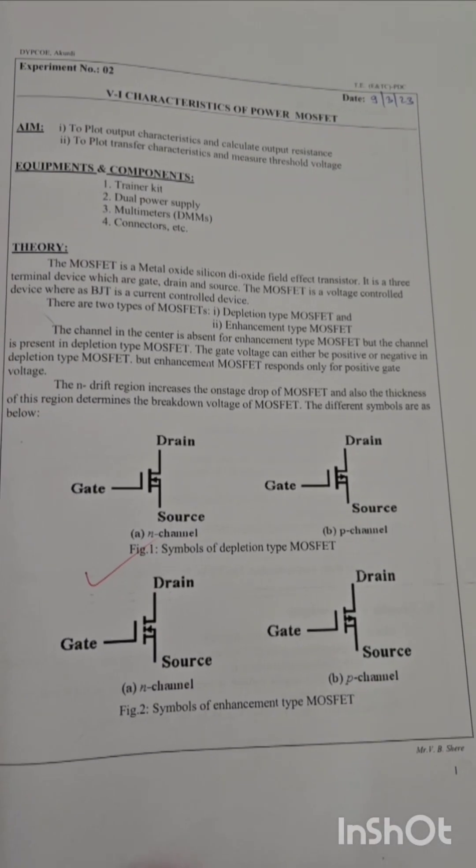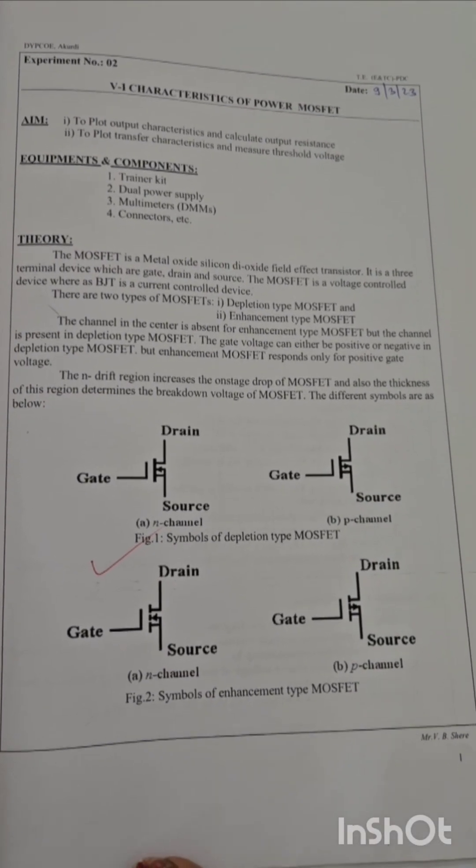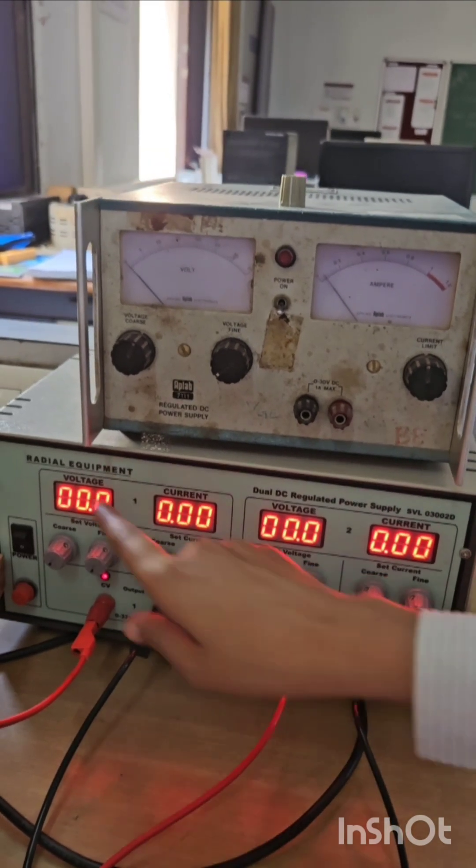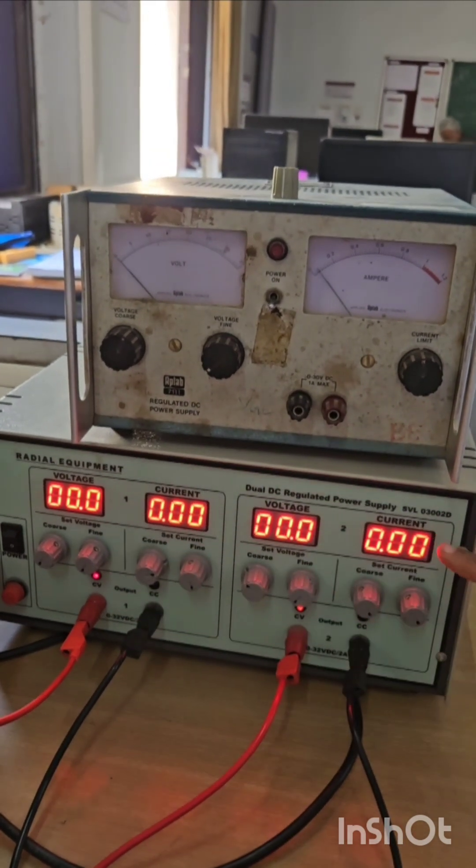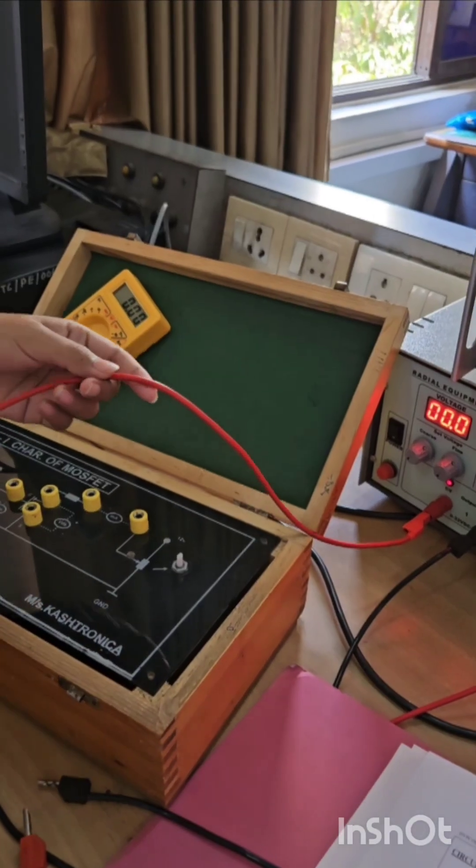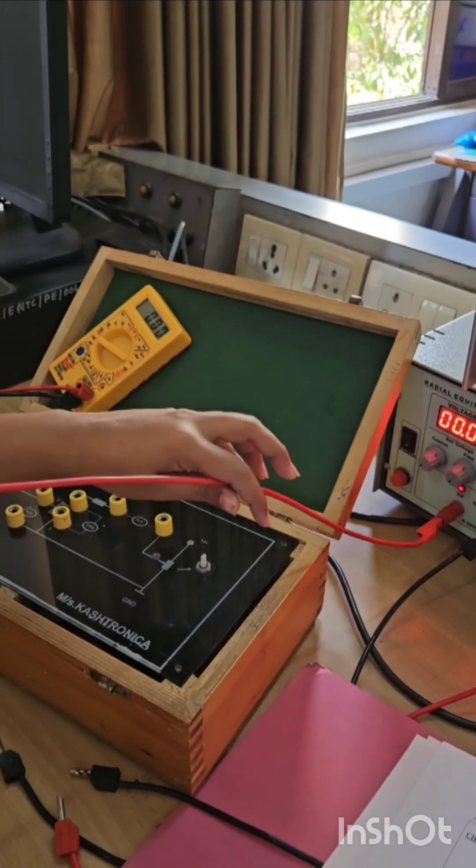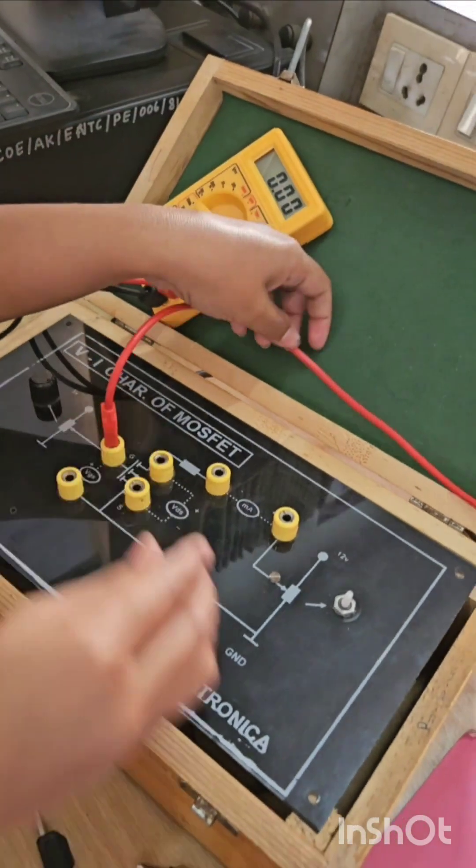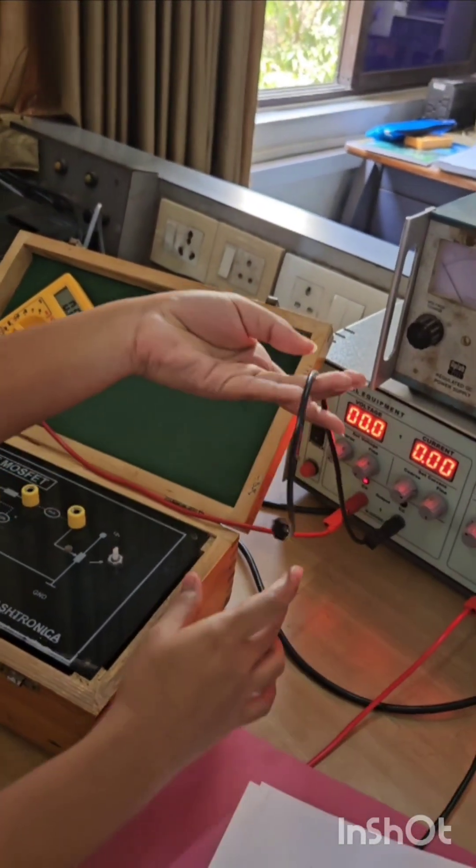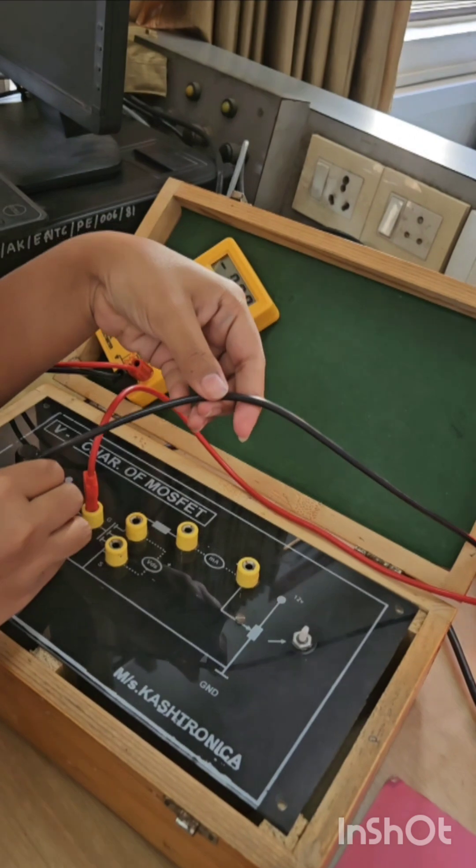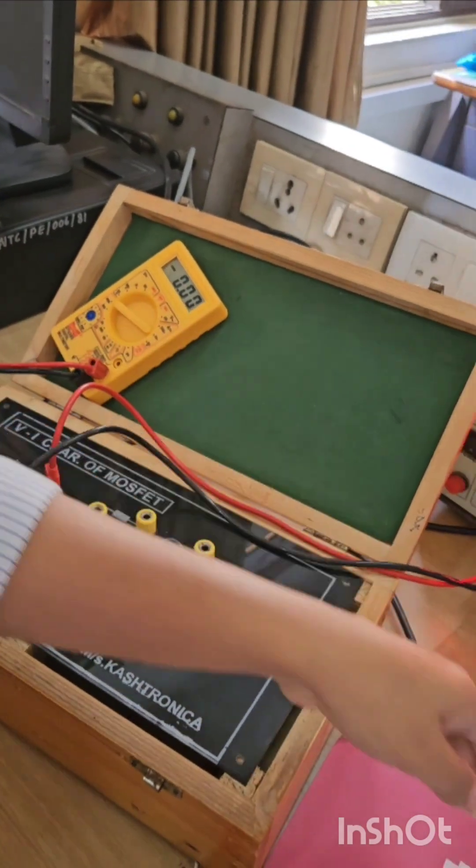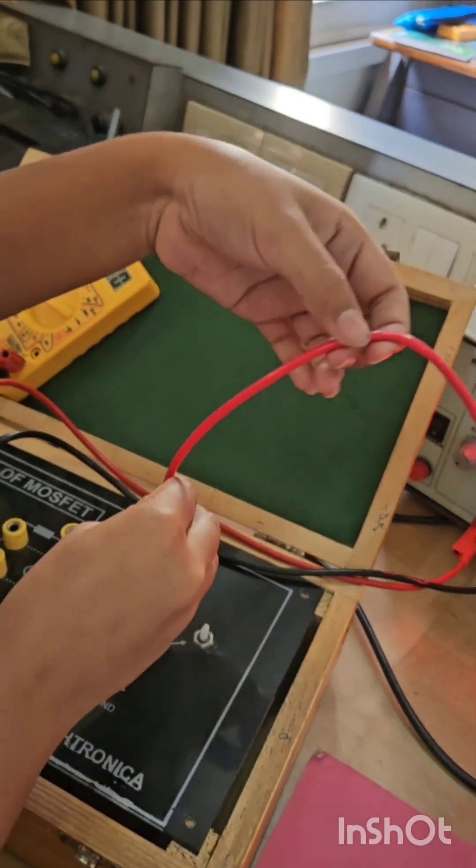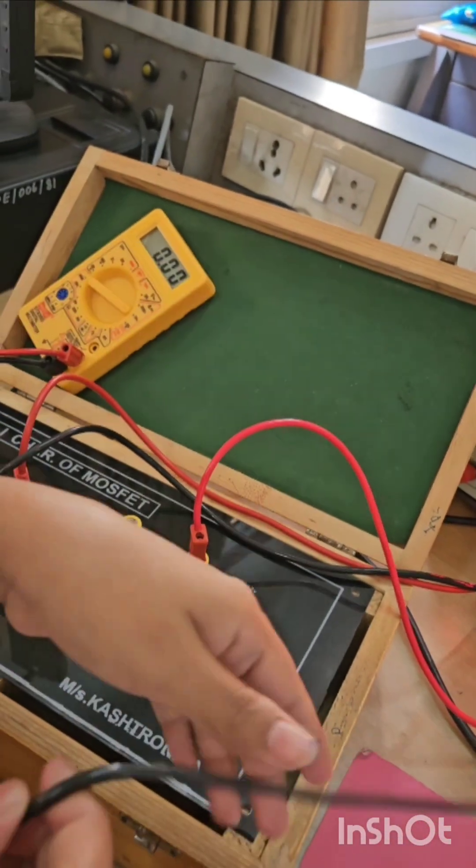This is experiment number two: VI characteristics of power MOSFET. This is a dual power supply. The first part is used for VGS and the second part is used for VDS connections as per the diagram. This is for VGS positive, connected to the positive VGS, and this to the negative of VGS. This is for VDS, connected to the positive. Source is common.